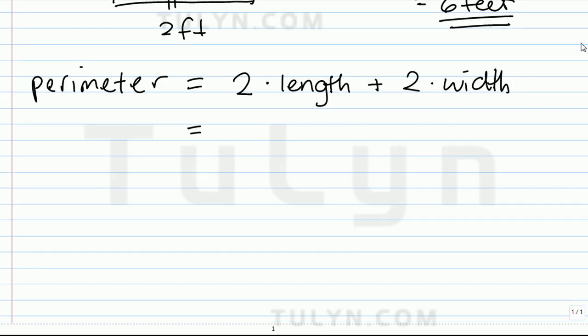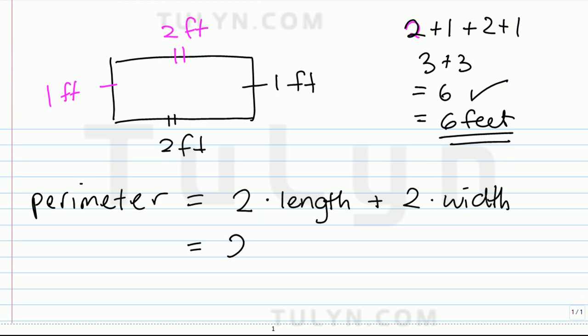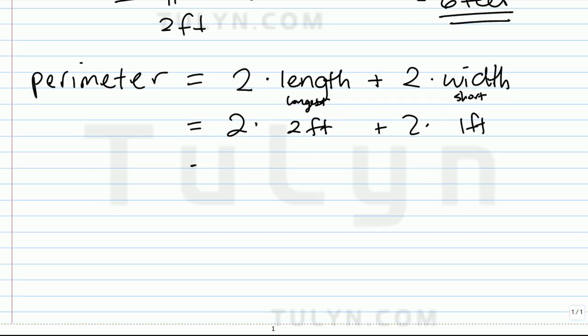Or you could have done it this way. Two times your length, which is the longest side, and that's two feet. Plus two times your width, which is one foot. That's your short side width. And two times two is four, plus two times one is two, is six feet altogether.